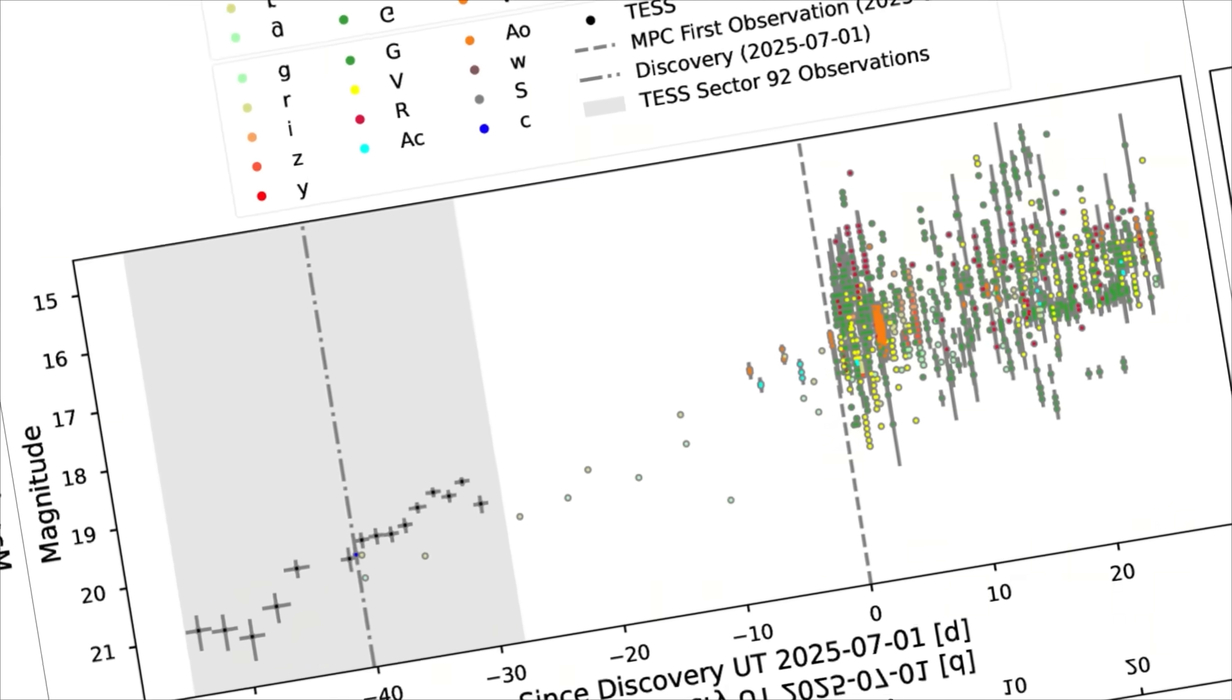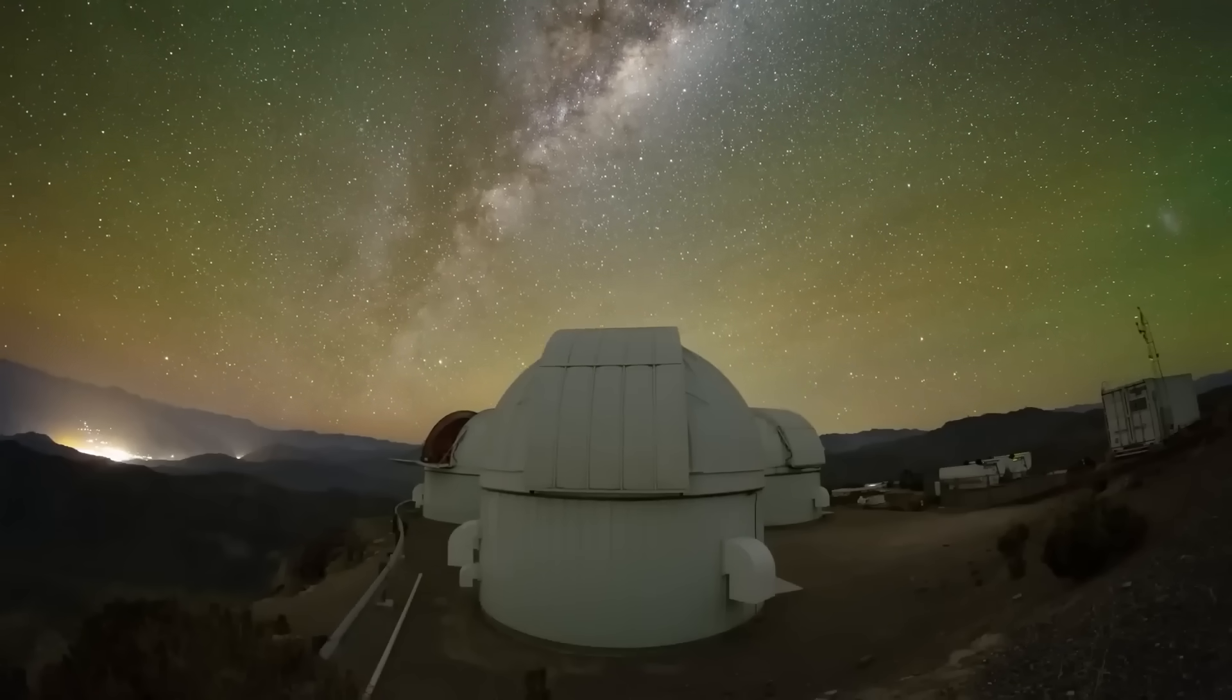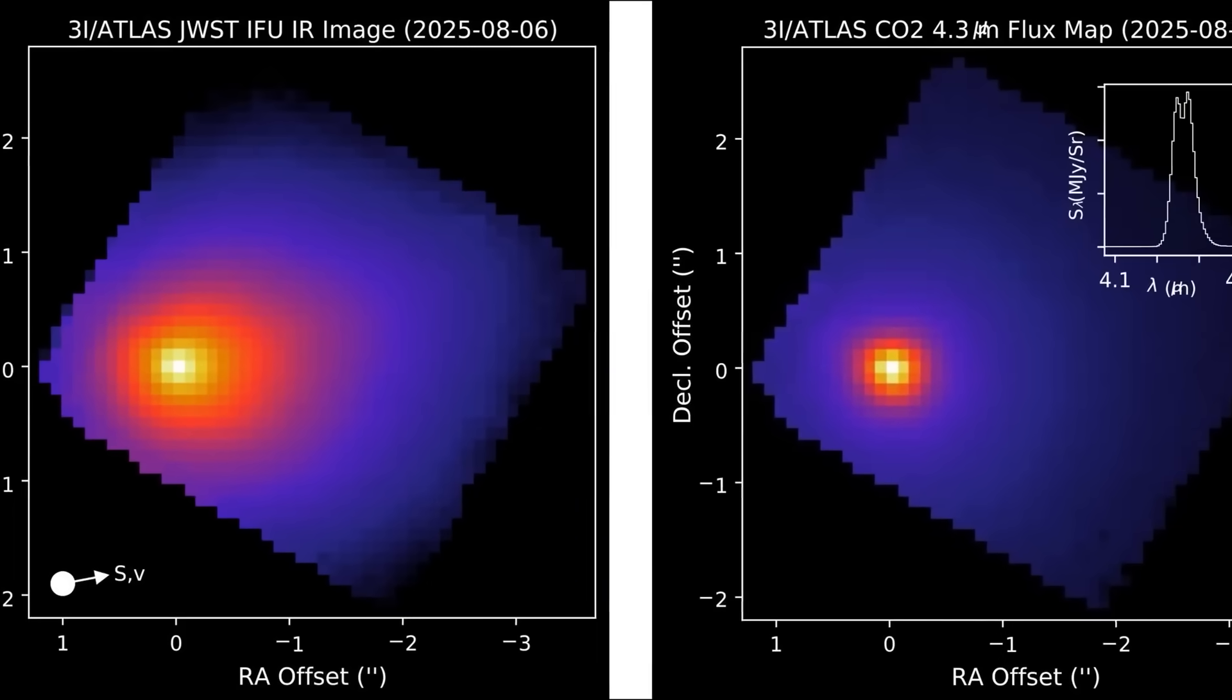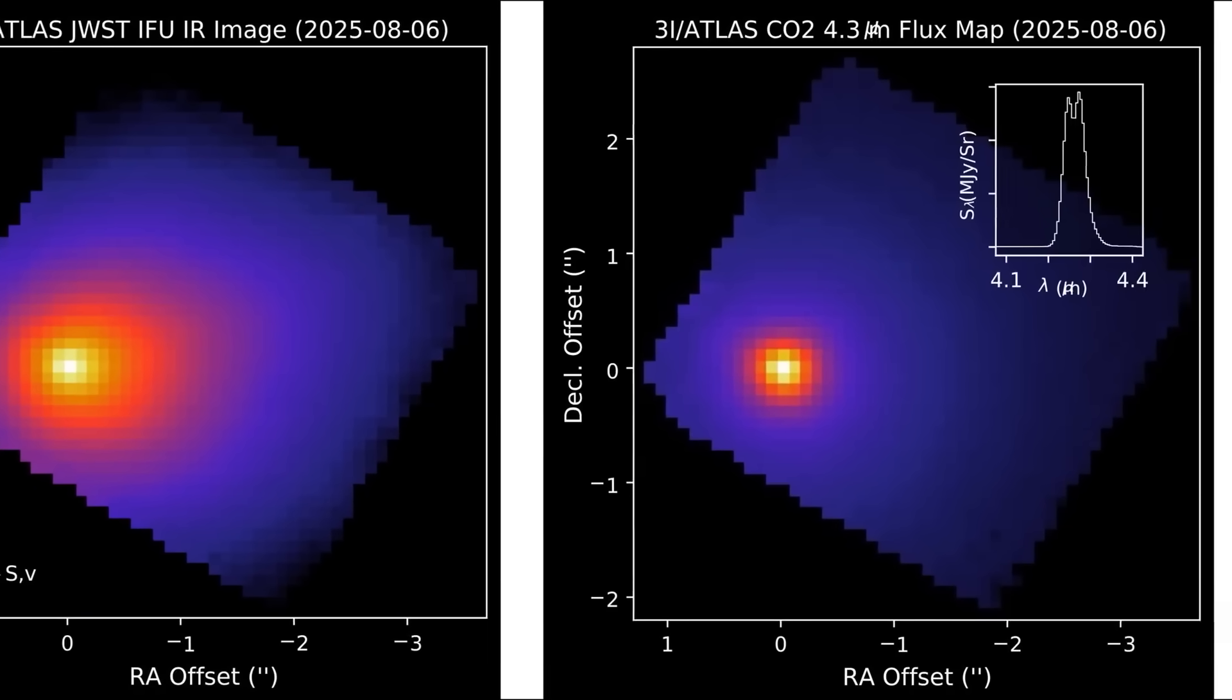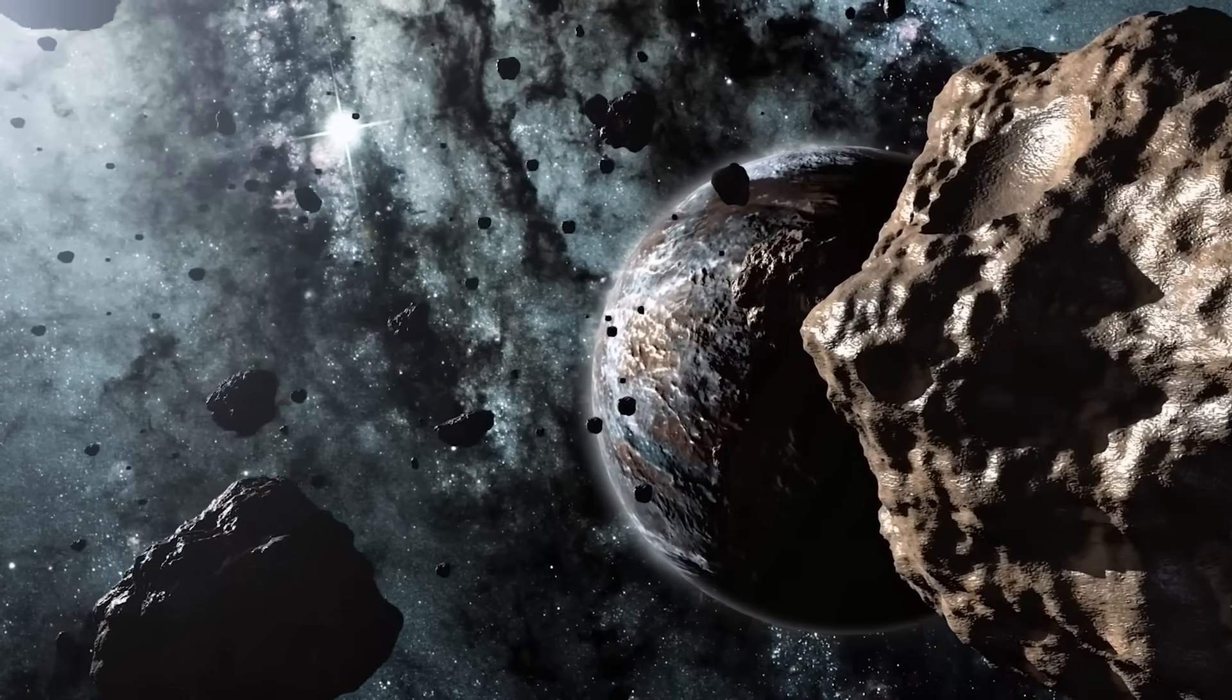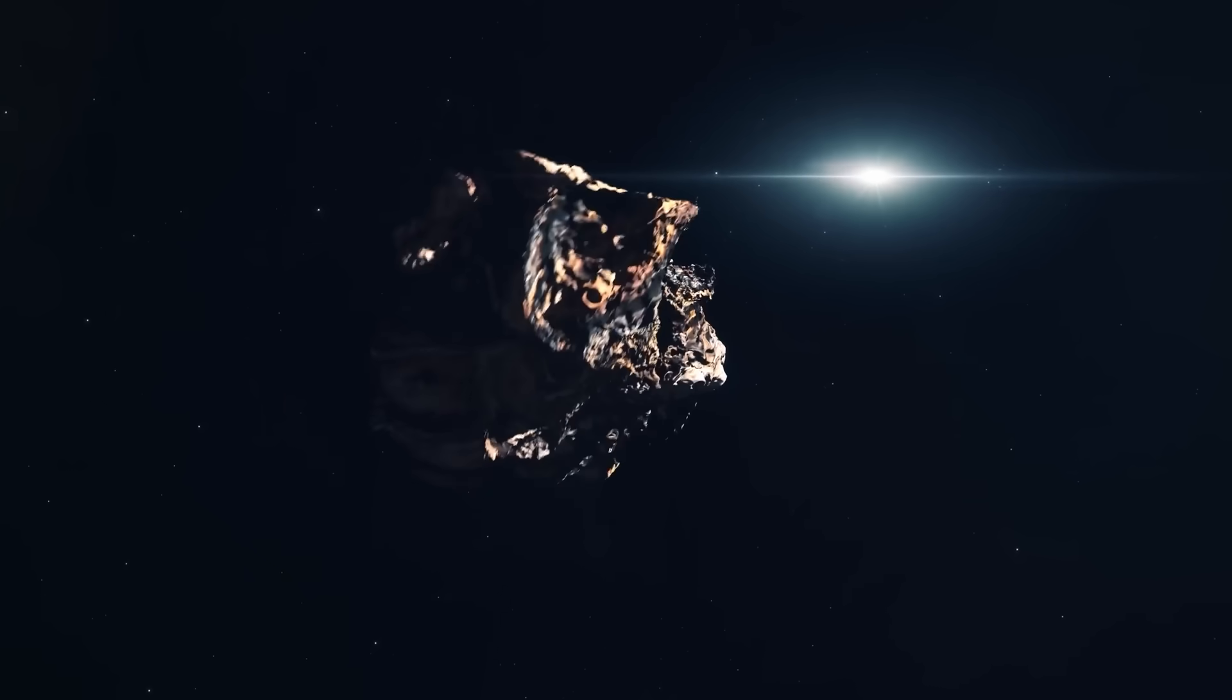Data streamed from observatories across the globe. Pan-STARRS in Hawaii, the Rubin Observatory in Chile, Catalina in Arizona, all reported the same result. ATLAS was not following the script of a standard brightening. Its curve was spiking erratically, its morphology shifting day to day. What began as a point of light had evolved into a stage for dynamic events no one had predicted.